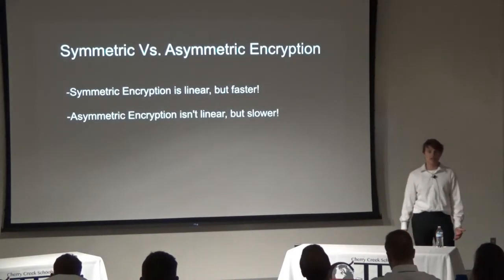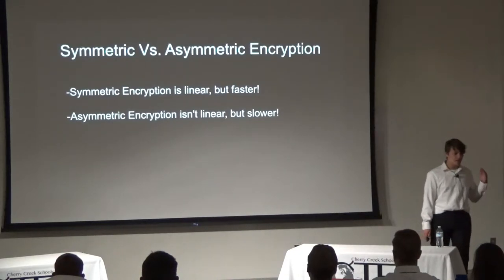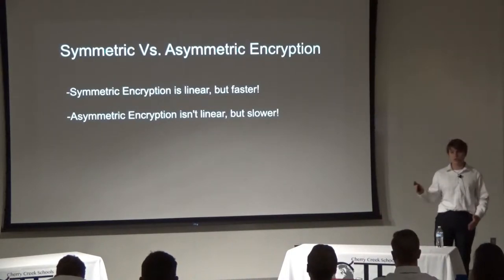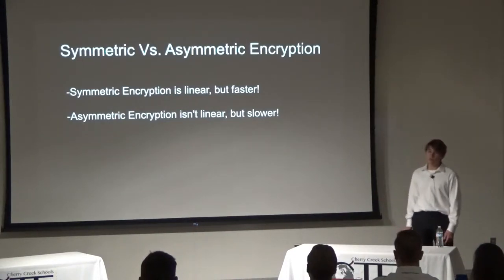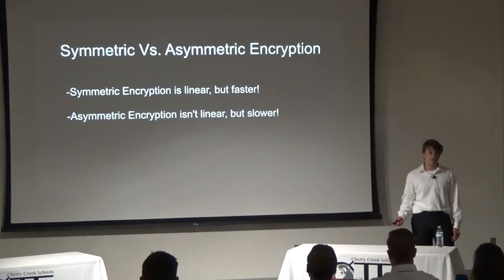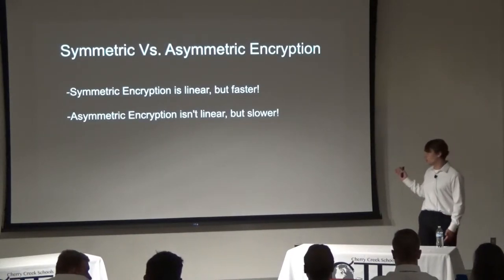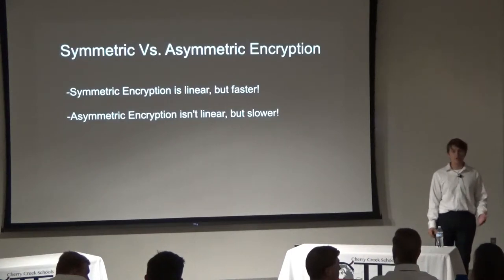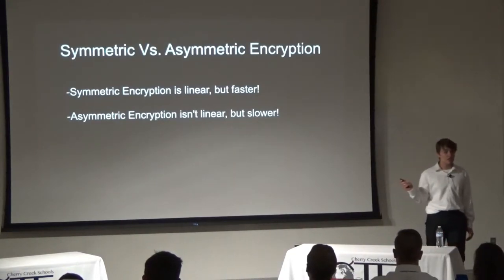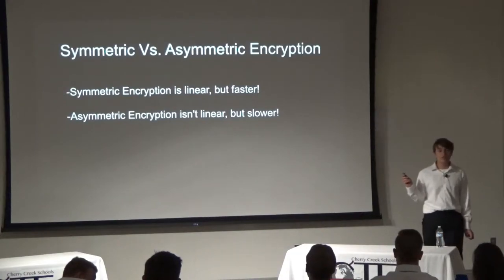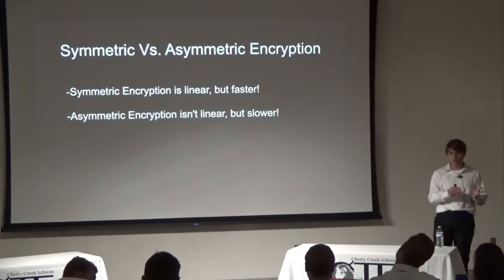One of the biggest things I had to research going into this project was the difference between asymmetric and symmetric encryption. Symmetric encryption is a linear encryption method, meaning you can reverse it using the inverse — for example, encrypting with x-squared and decrypting with the square root of x. This makes symmetric encryption extremely fast. Asymmetric encryption, on the other hand, is not linear — you cannot determine one side of the encryption algorithm from the other side, making it much slower but far more secure.